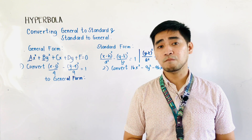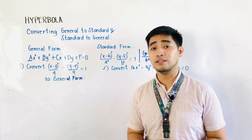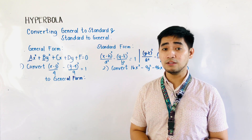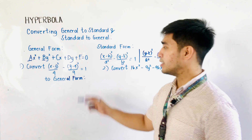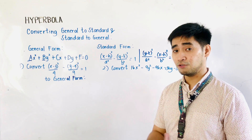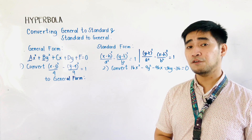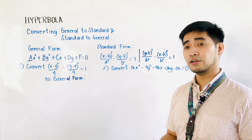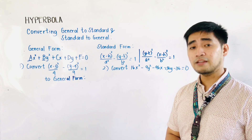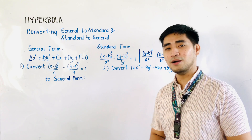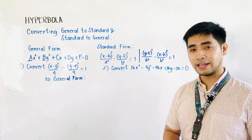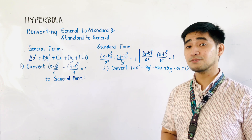For the first example, we are asked to convert (x−3)²/4 − (y−4)²/9 = 1 into general form. Recall the two standard forms: for a horizontal transverse axis, the equation is (x−h)²/a² − (y−k)²/b² = 1; for a vertical transverse axis, it is (y−k)²/a² − (x−h)²/b² = 1. The right side of the standard form is always equal to 1.